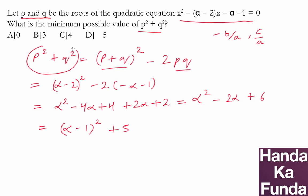So the value of P square plus Q square will be given by alpha minus 1 whole square plus 5. What do we have to find out? The minimum possible value of P square plus Q square. When will this be minimum?